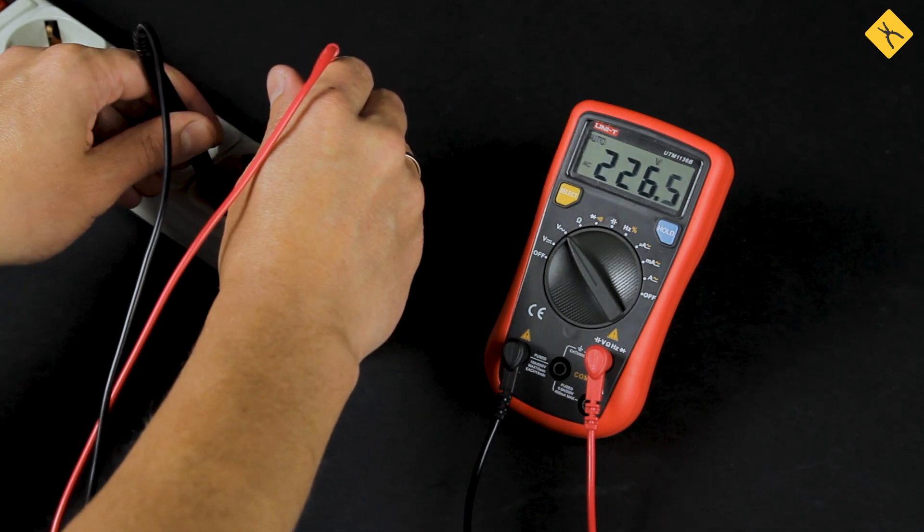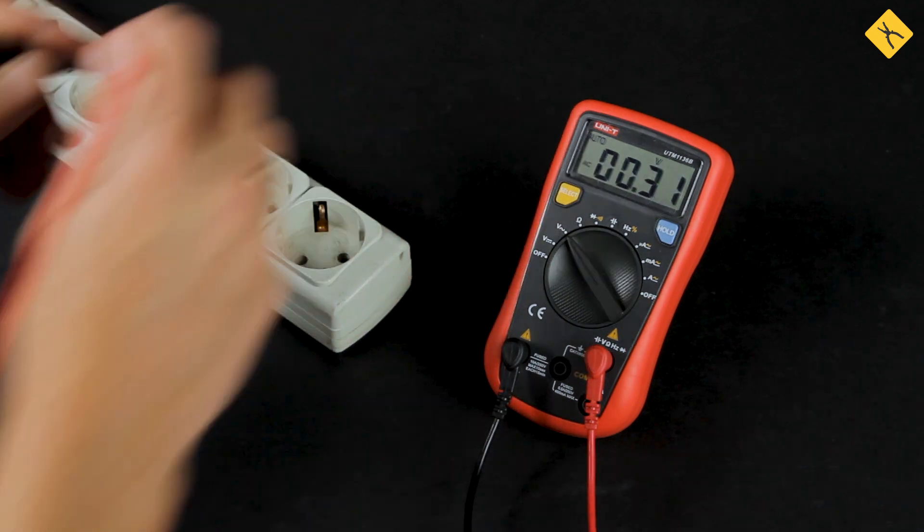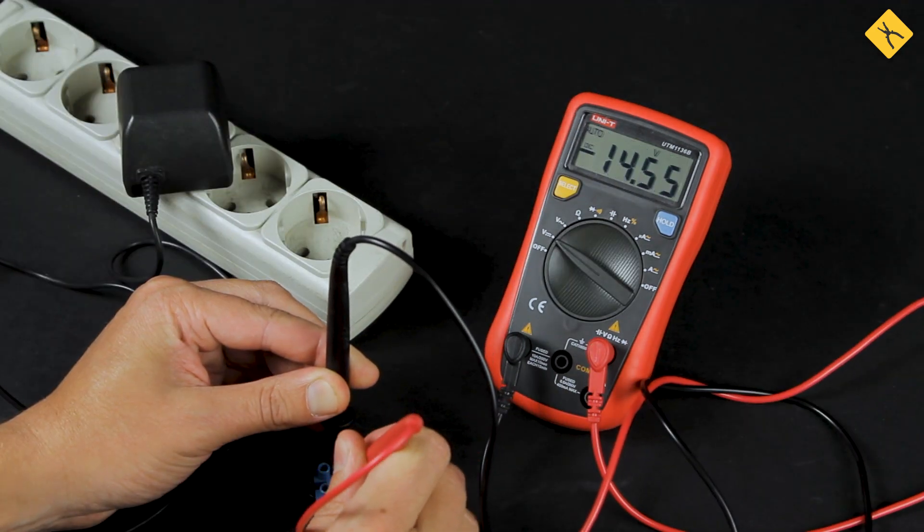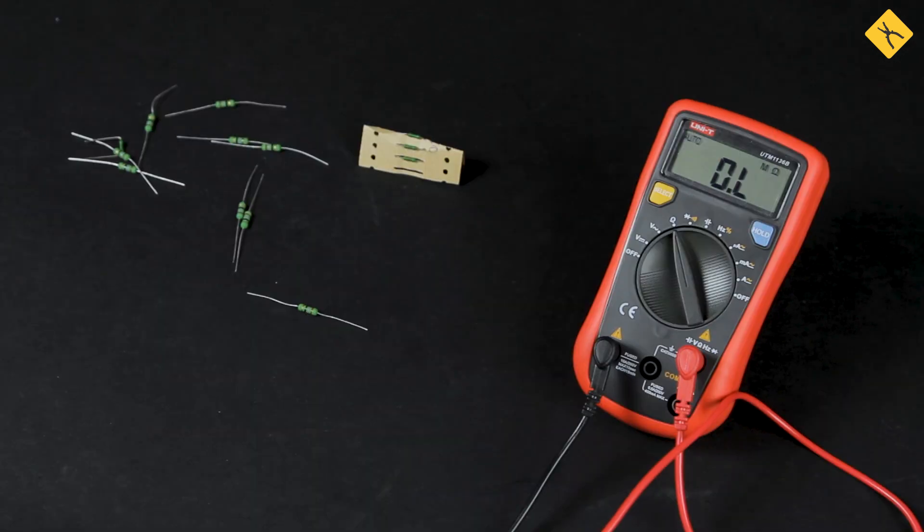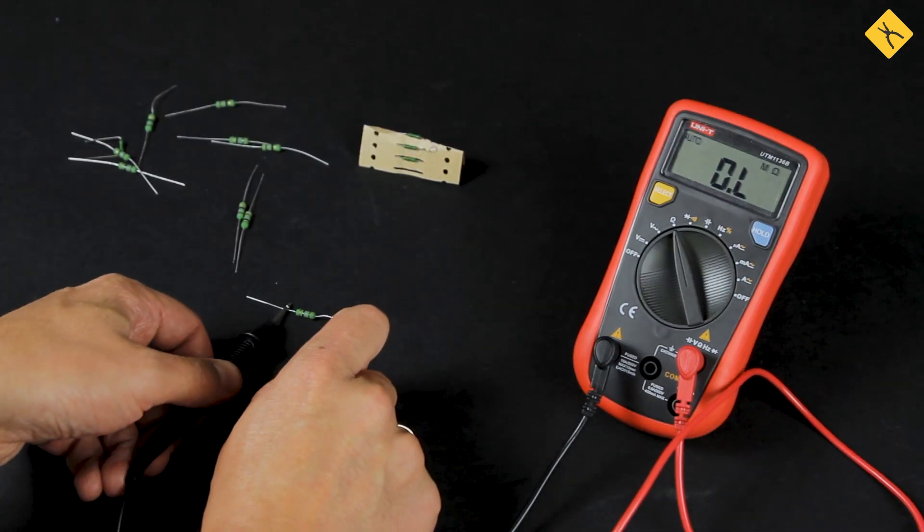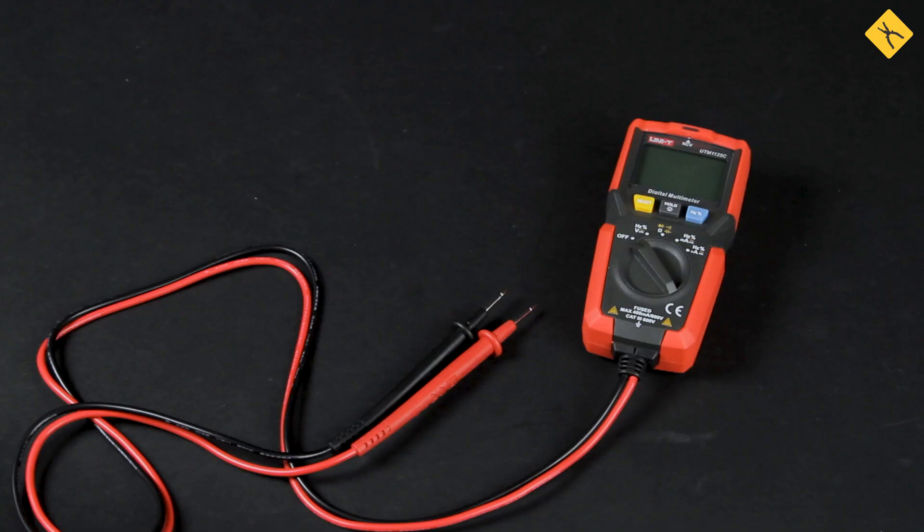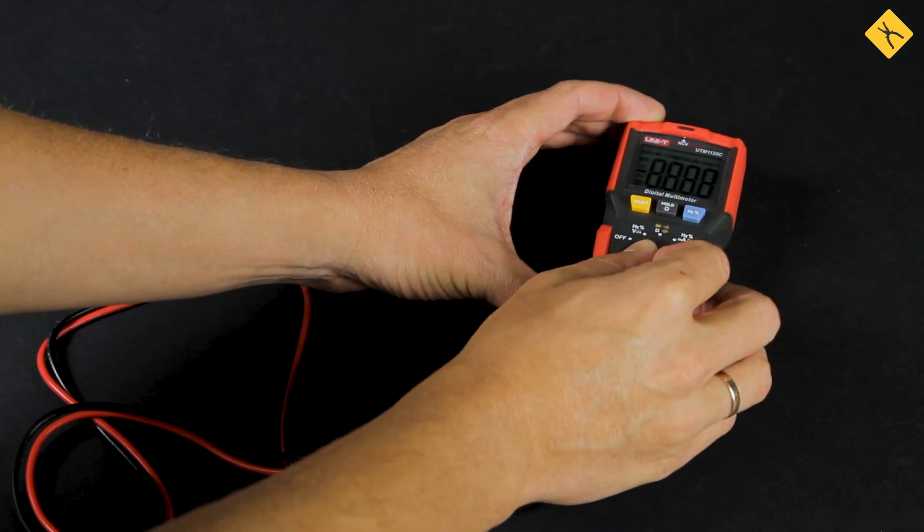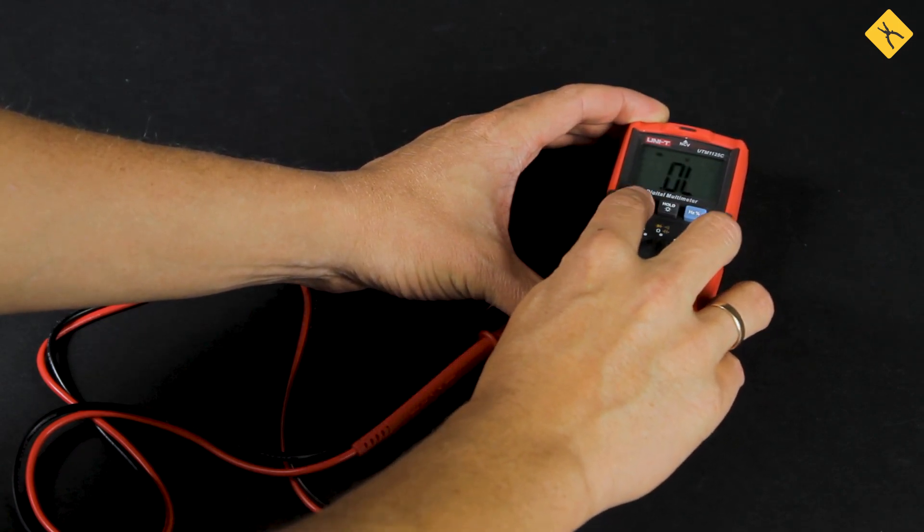AC and DC voltage measurements, current measurements, resistance measurements, capacitance measurements, and finally continuity tests. Most multimeters use a sound signal to indicate continuity of an electrical circuit. If there is no sound, the circuit is broken.